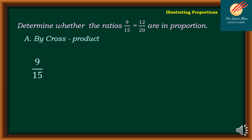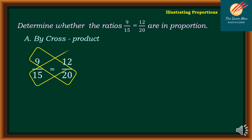I will write 9 over 15 and 12 over 20. I want to determine whether 9 times 20 is equal to 15 times 12. We found out that 180 is equal to 180. Therefore, we call this one a proportion.